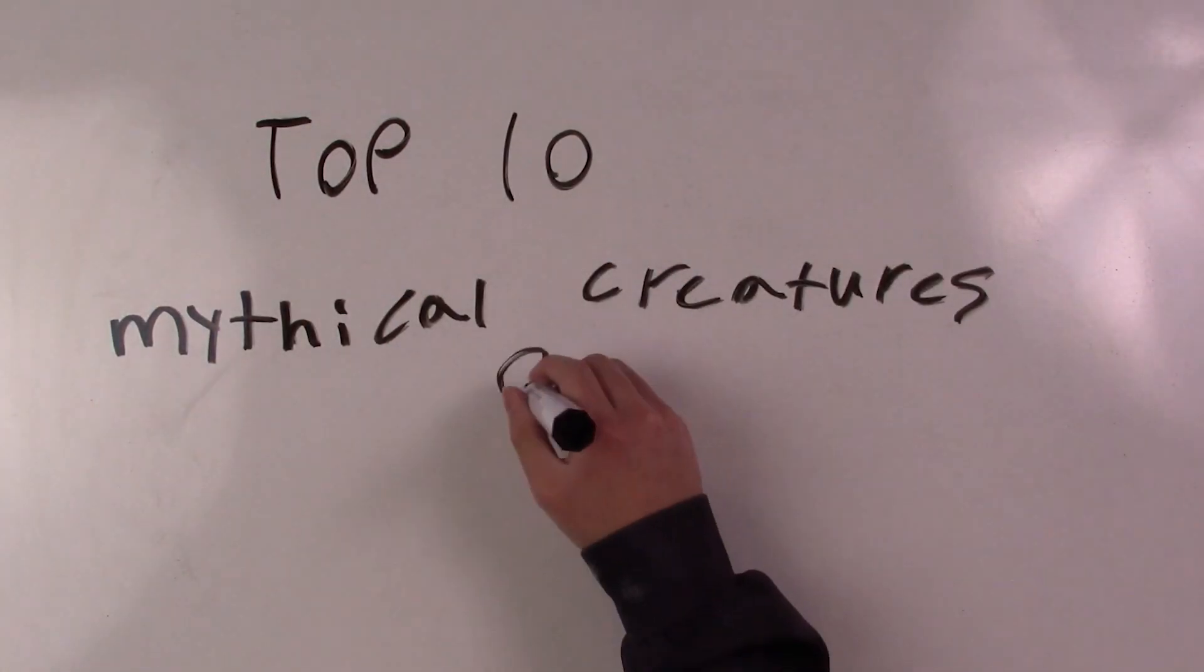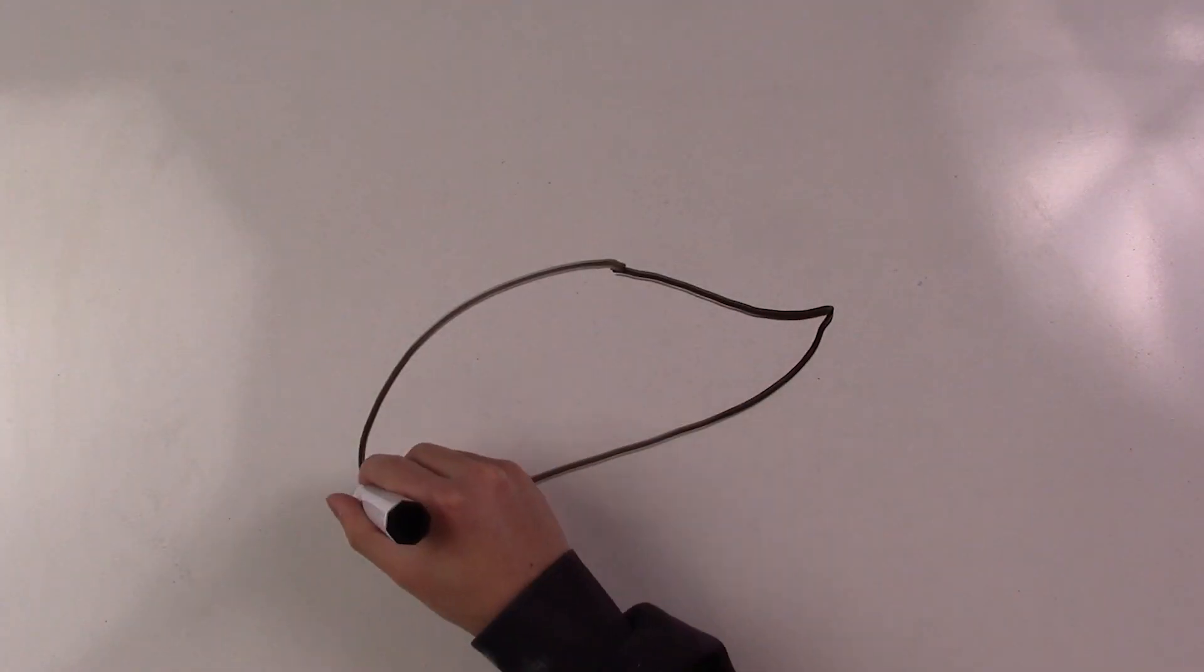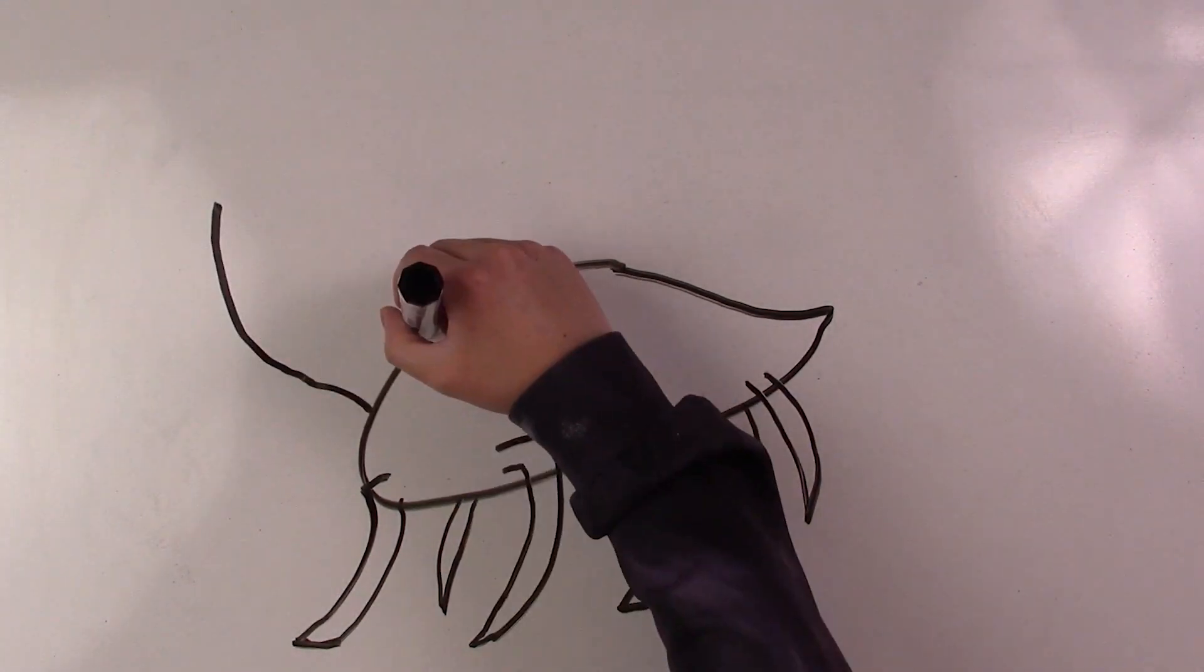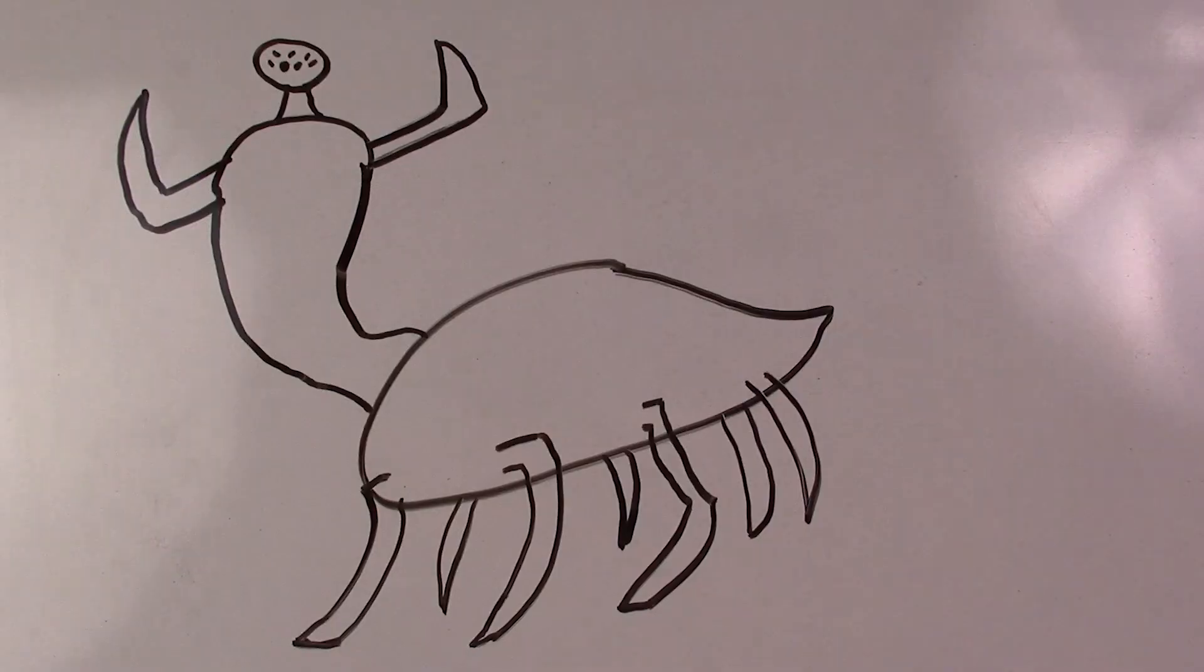My Top 10 Favorite Mythical Creatures and Gods. Number 10, Arachnid. A Greek myth monster, half-human, half-spider, with very fine webbing.